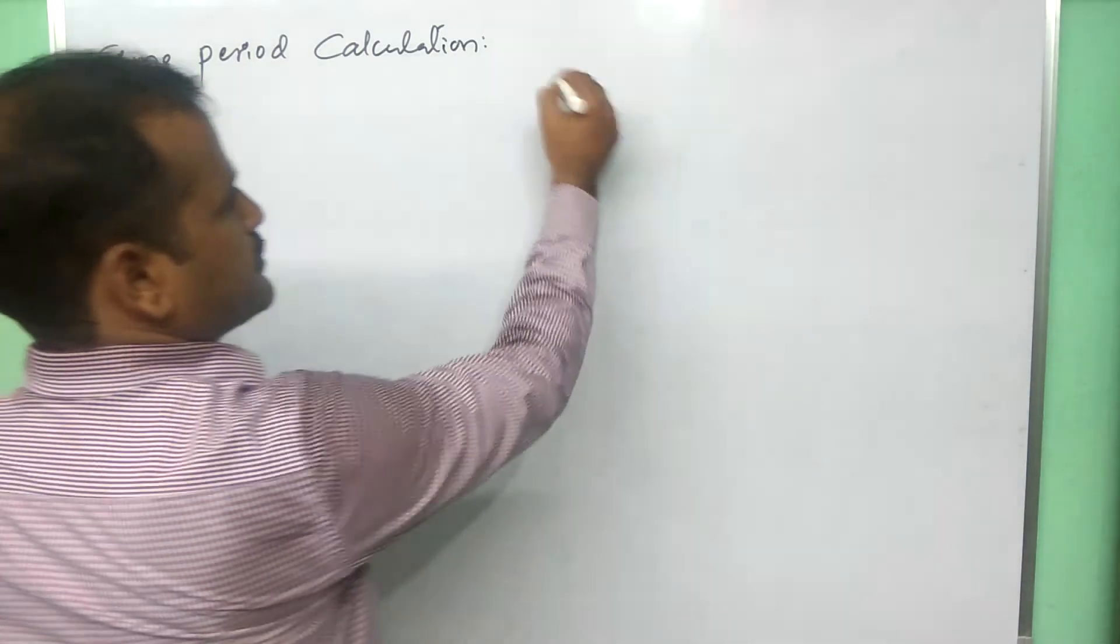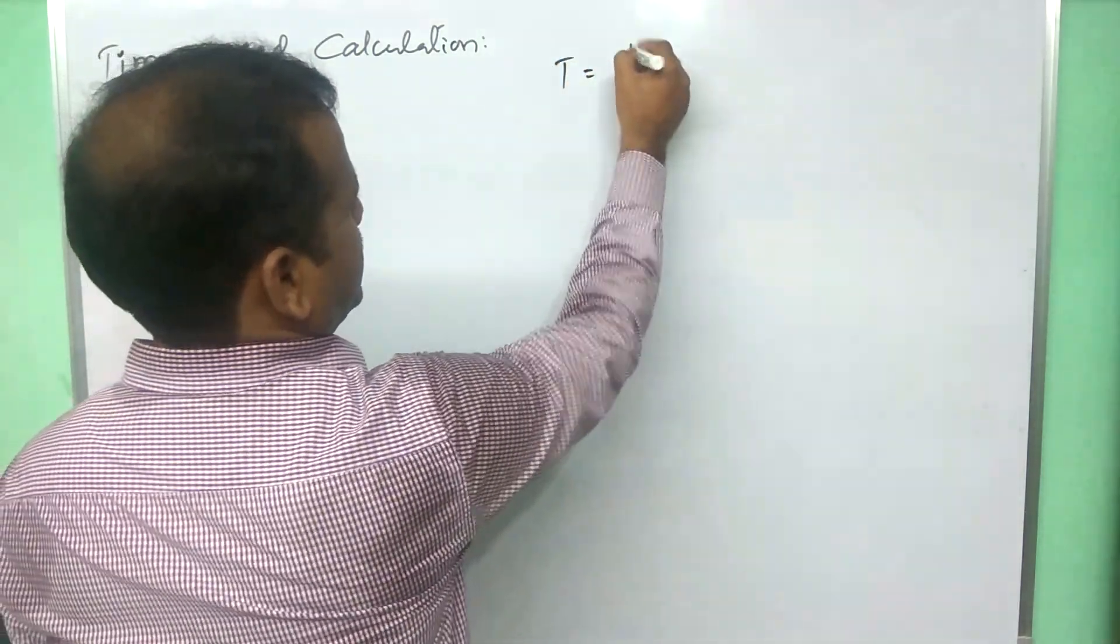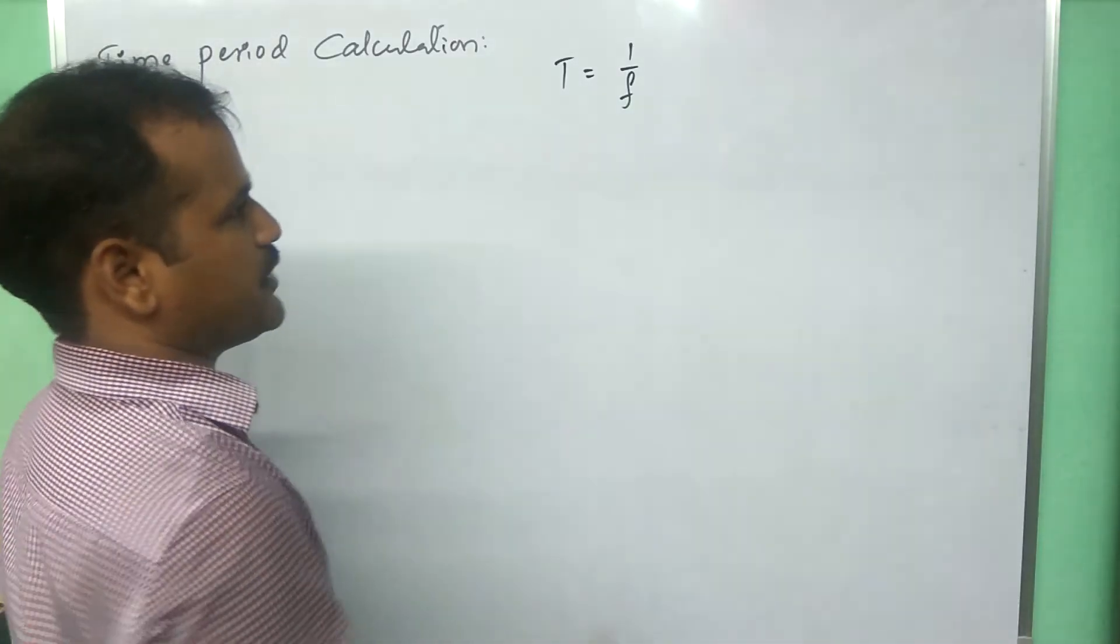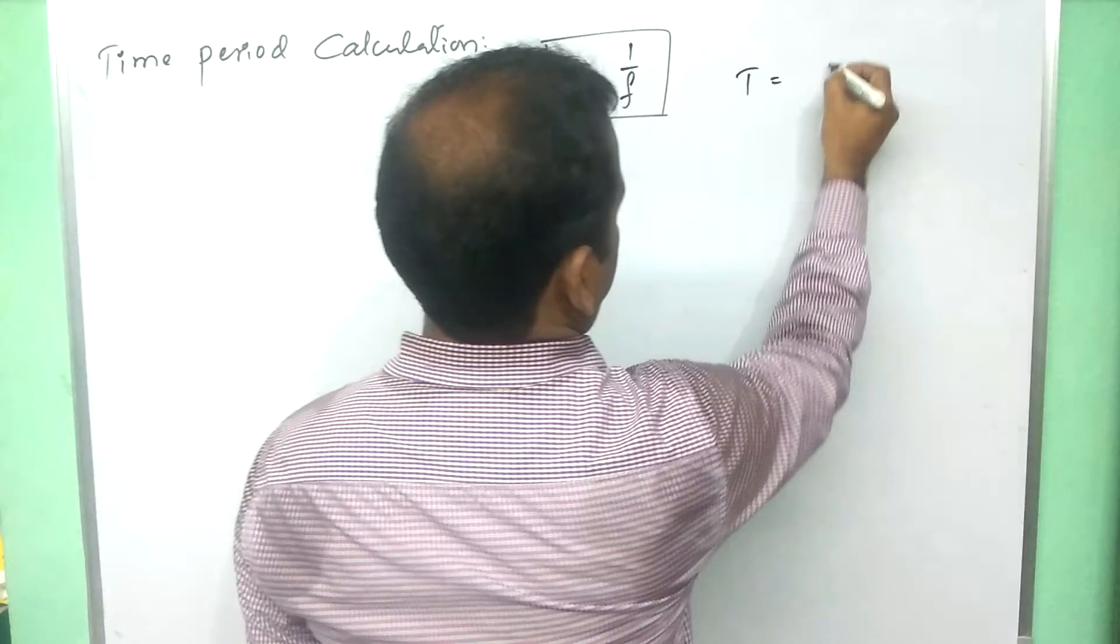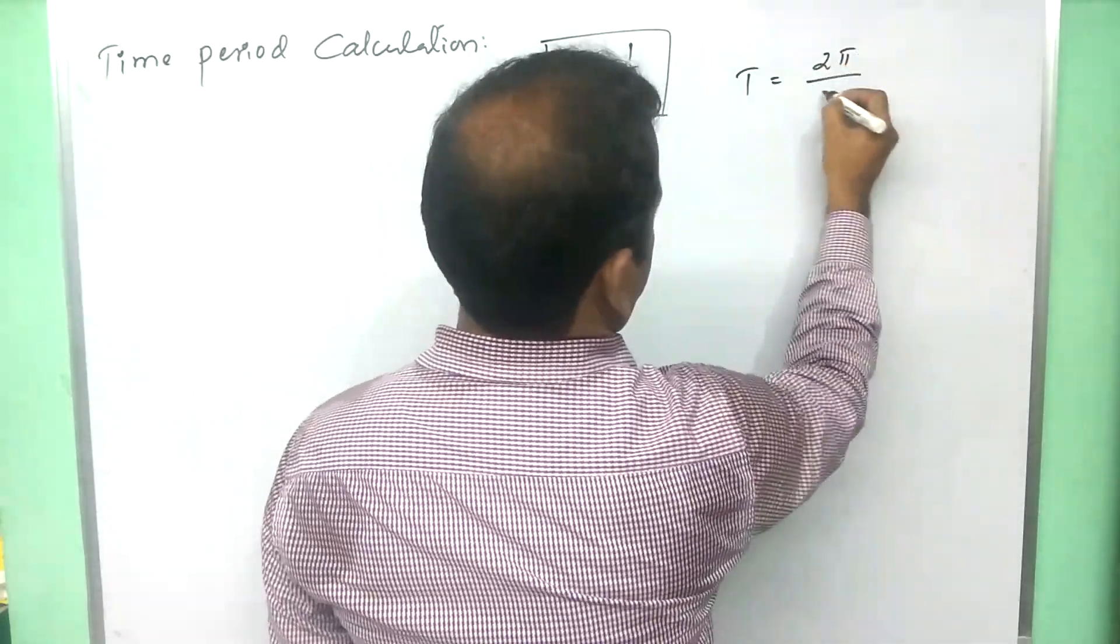First, let us recall the formula as time period in terms of cyclic frequency, this is the formula. Time period in terms of the radian frequency, this is the formula.